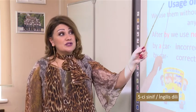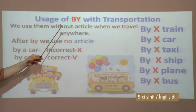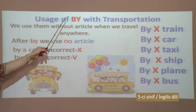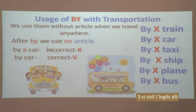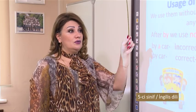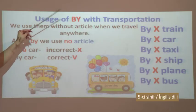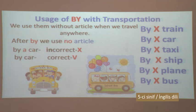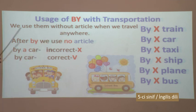Let's get acquainted with the usage of 'by' with transportation. We use 'by' without article when we travel anywhere. We use all of these - train, car, taxi, ship, plane, bus - without article when we travel anywhere. In other words, we use 'by' without article when we travel anywhere. After 'by' we use no article.